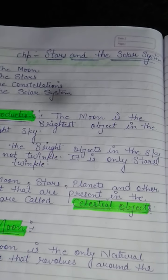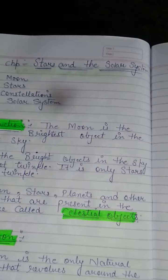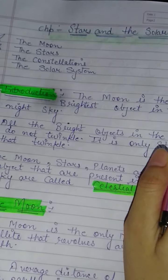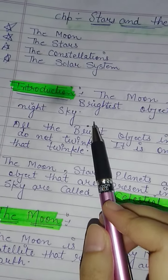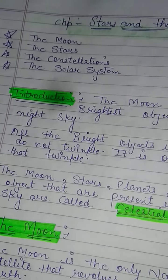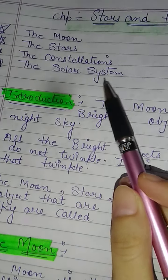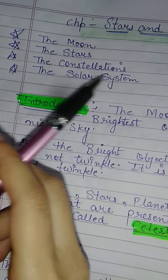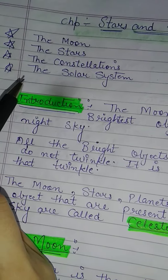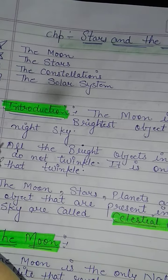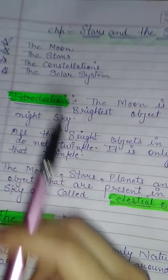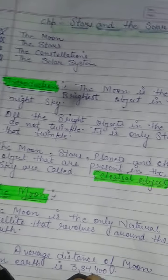Hello students, today we will start a new chapter: Stars and the Solar System. In this chapter we will study four topics: the Moon, the Stars, the Constellations, and the Solar System. First of all, we will start with the first topic, that is the Moon.